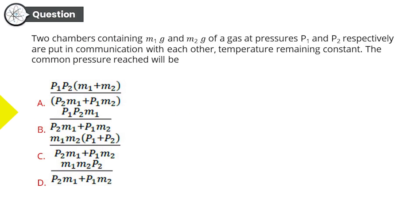Another amazing and easy question. A lot of confusion between P's and M's. Let's see. Two chambers containing M₁g and M₂g of a gas at pressure P₁ and P₂ respectively are put in communication with each other. I have no idea how the gases are communicating, but they are. Temperature remaining constant, the common pressure reached will be: